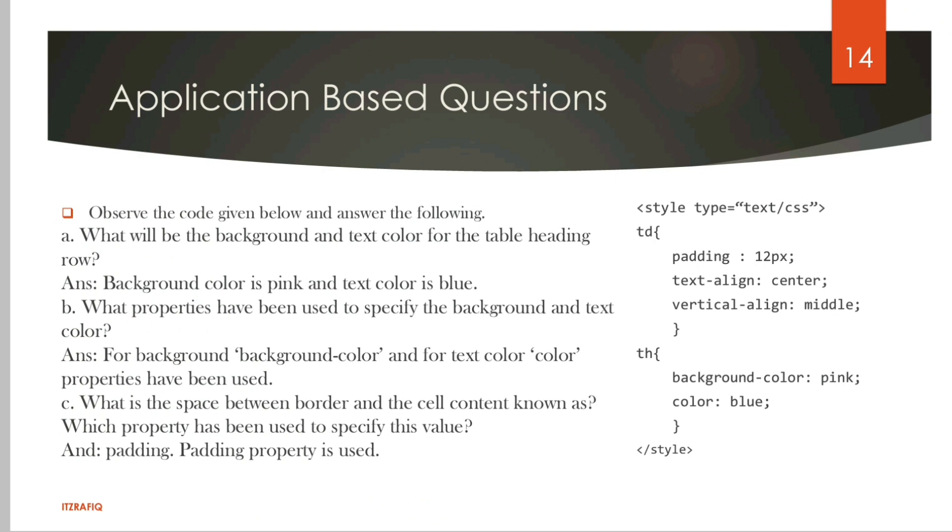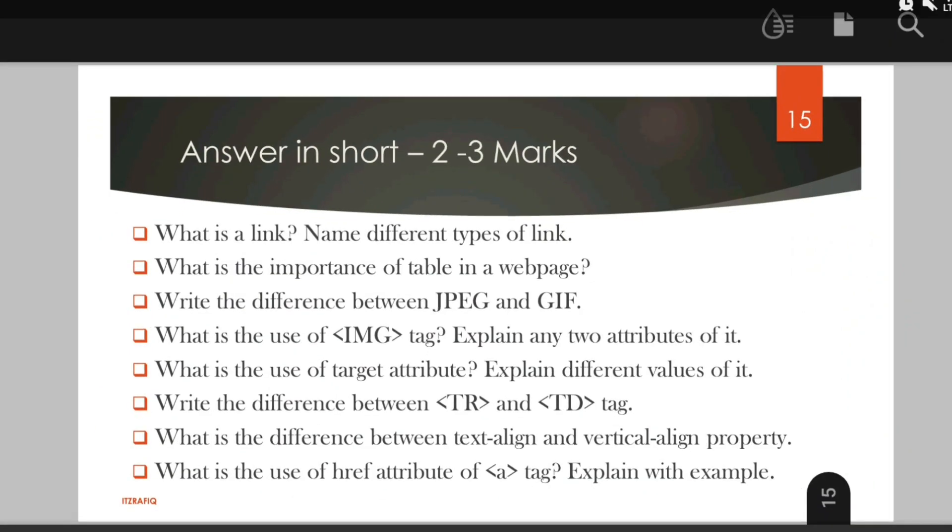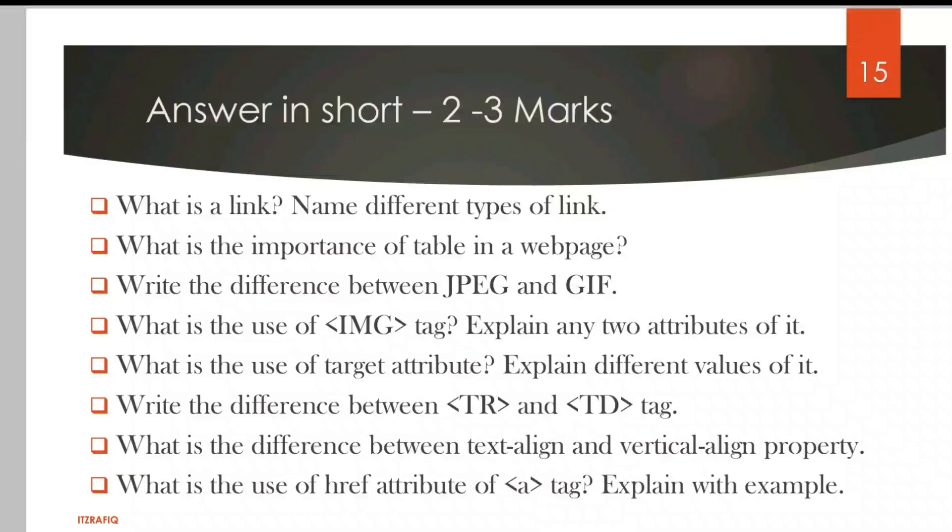What is the use of target attribute? Explain the different values. The target attribute is used to define where the linked document will be opened. The different values are blank, self, top, parent. Write the difference between TR and TD tag. TR tag is used to insert a table row, and TD is used to insert an individual block in the table. Difference between text-align and vertical-align: text-align gives horizontal alignment, vertical-align gives vertical alignment to the table data. Values for text-align: left, right, center. For vertical: top, middle, bottom.